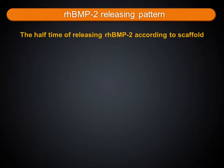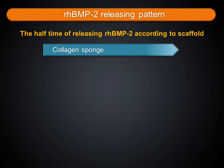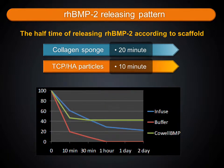RHBMP2 is released from scaffolds. The half-time of releasing RHBMP2 refers to the pharmaceutical action period. To evaluate the half-time, the releasing dose was measured from 10 minutes to 2 days. The half-time differed according to the kind of scaffold: TCP/HA particles had a half-time of 10 minutes, releasing faster than the 20-minute half-time of collagen sponge.